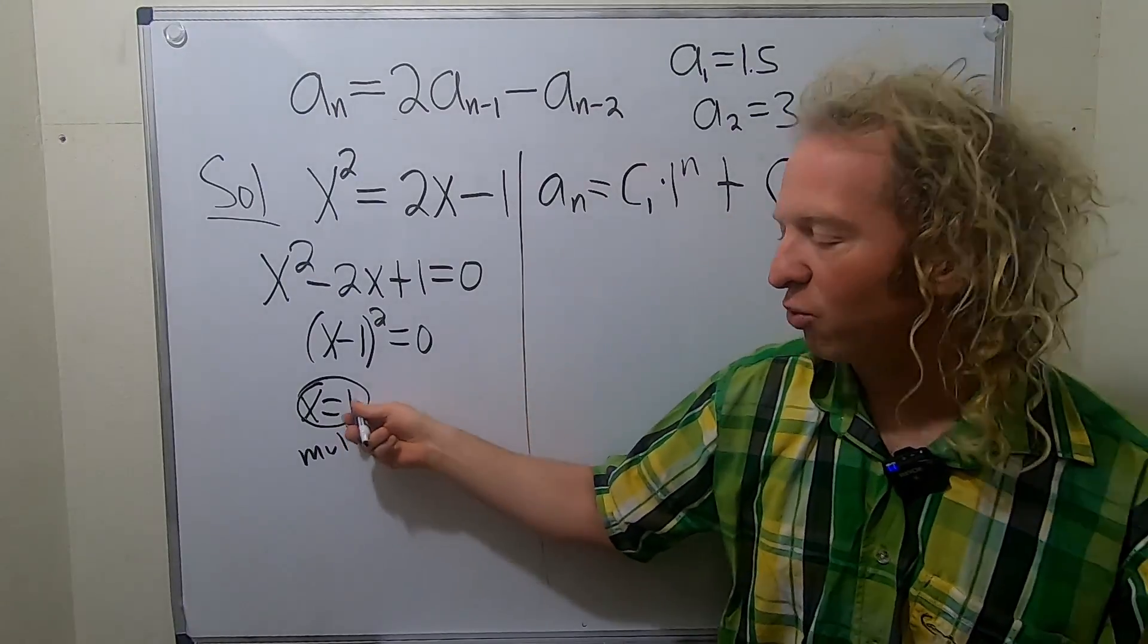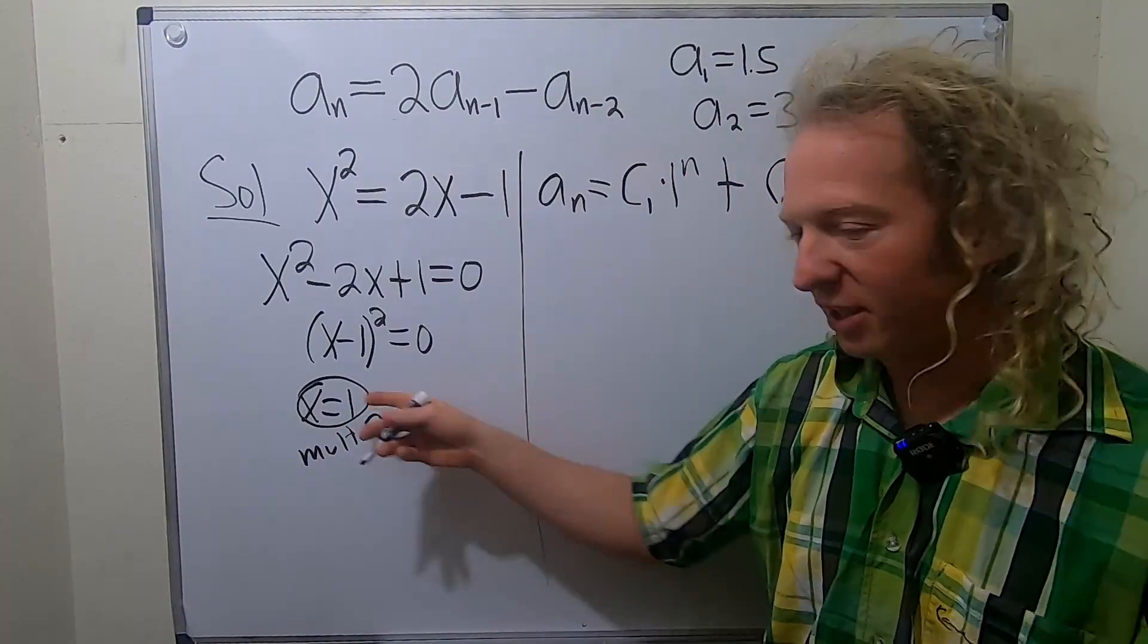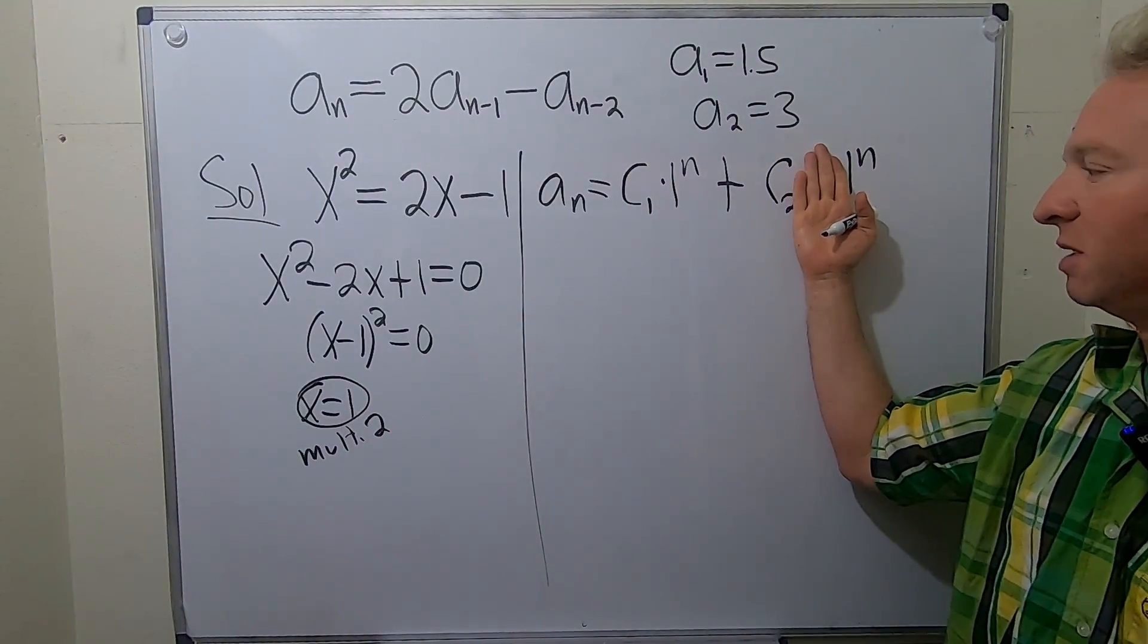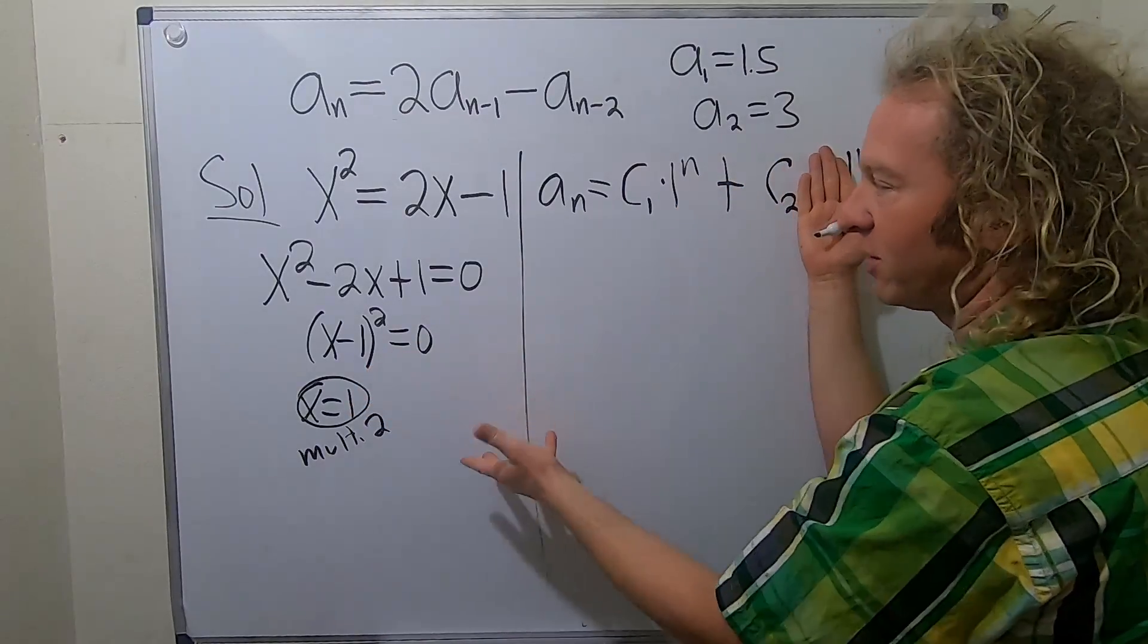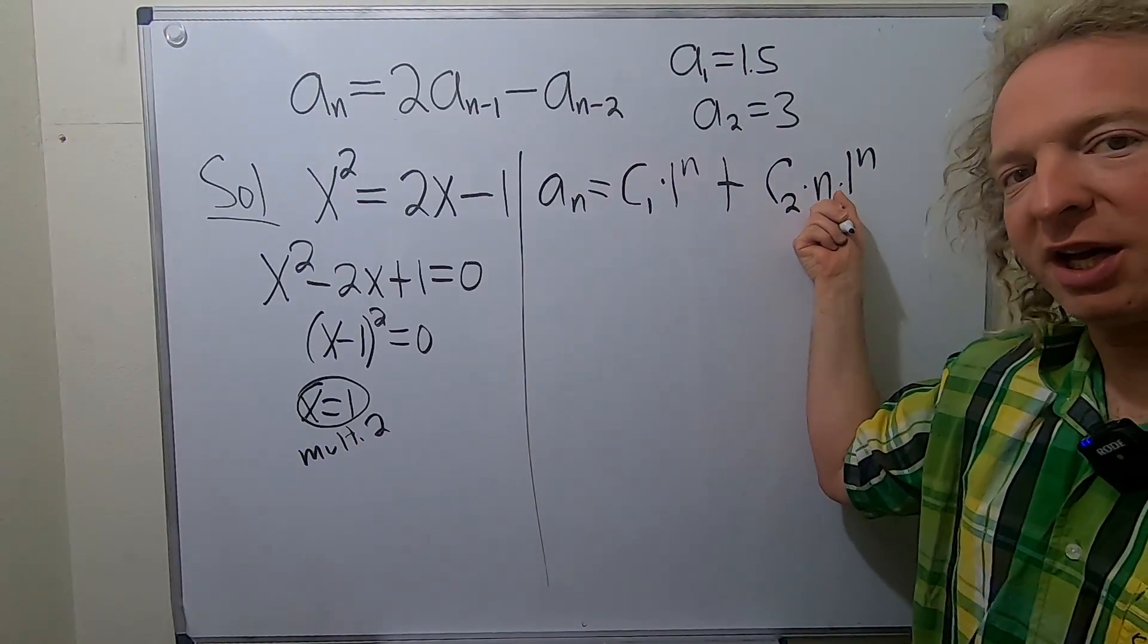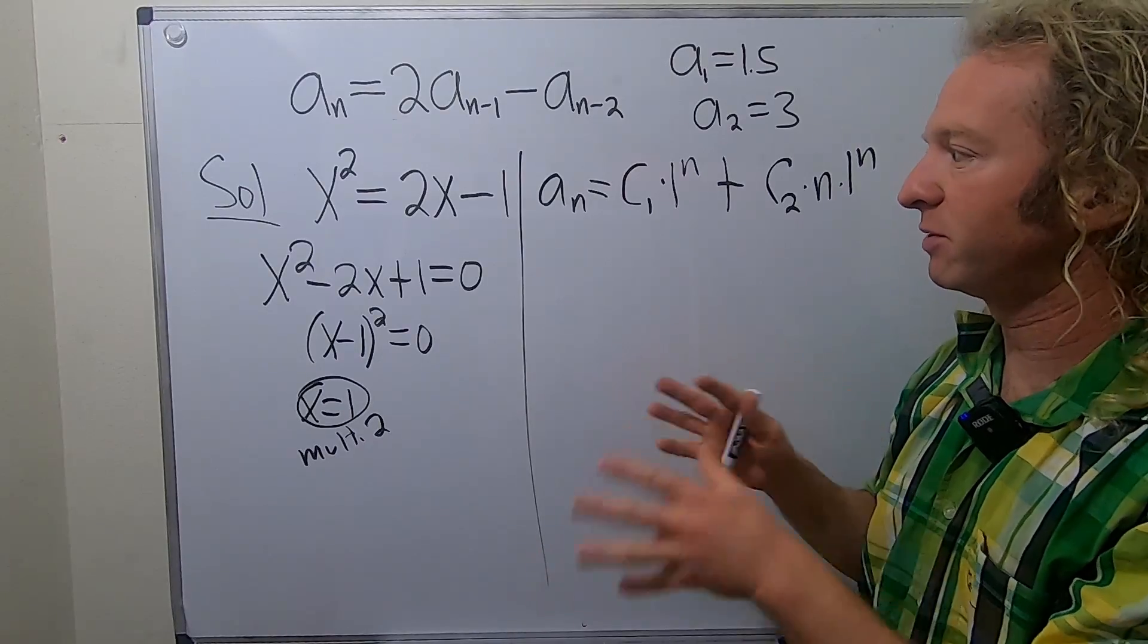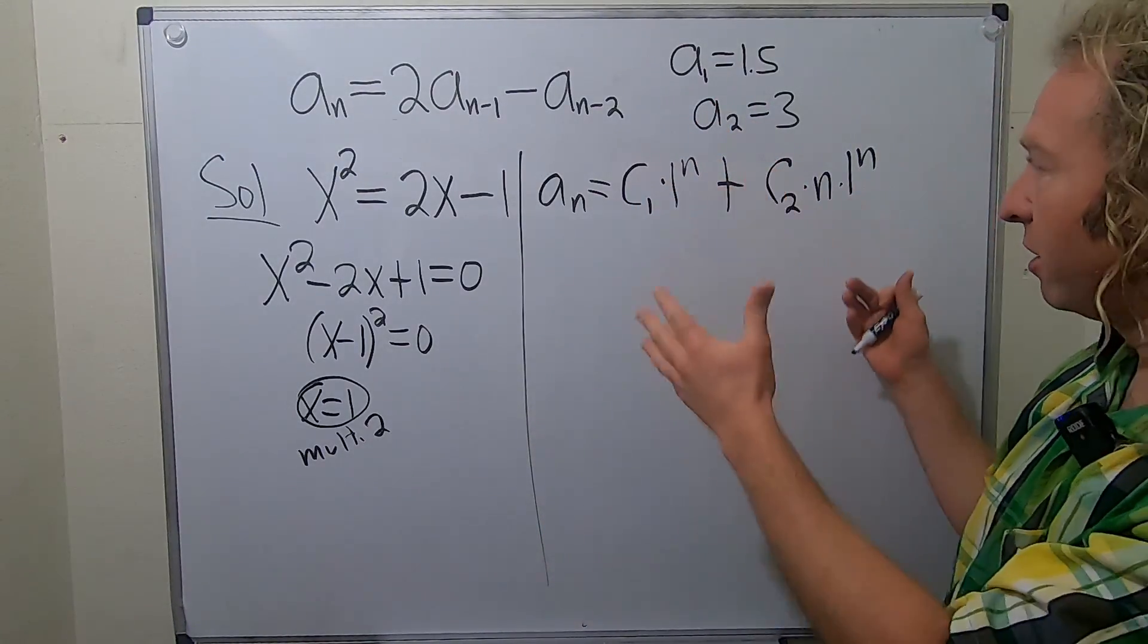So whenever it's repeated, you write it twice and you put an n. Say you had gotten 2 and 3, like different answers. Then it would be 2 to the n, 3 to the n, and you wouldn't have this piece. So if you had gotten 2 and 3, you would get 2 to the n, 3 to the n. If you get 4 and 5 as answers, it's 4 to the n, 5 to the n. But whenever it's repeated, you write it twice and you have to put an n there. So again, if you've seen differential equations, if you've solved these types of differential equations that use this, this will seem familiar. So we're here.